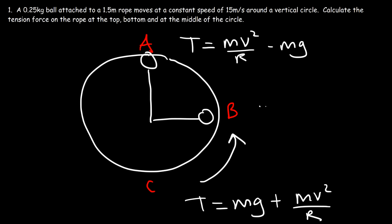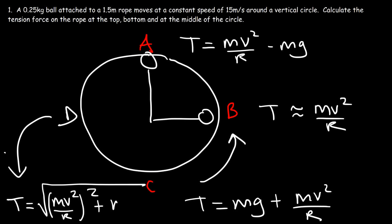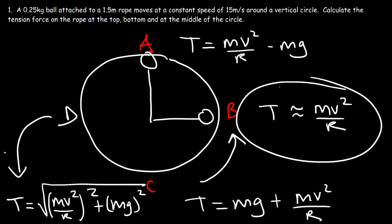At point B — the middle — if the ball is moving fast enough, the tension force is approximately equal to the centripetal force. If it's not moving fast enough, it's the square root of (mv²/r)² plus (mg)², where tx equals mv²/r and ty equals mg. For the most part, if it's moving fast enough you can approximate tension as mv²/r, since mg becomes insignificant. Now let's derive those equations before working out this problem.